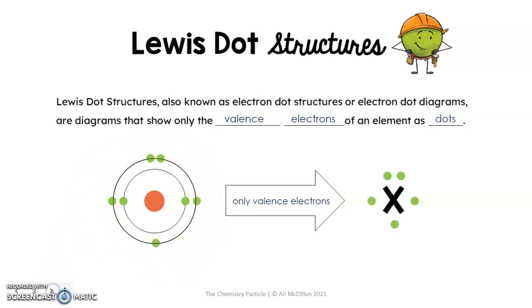When we draw our electron dot diagram, we're going to put the symbol of the element in the middle, and then we're going to essentially draw the same thing that's in our outer ring of our Bohr model just around the elemental symbol. So this one has 5 valence electrons, 5 dots to represent those valence electrons in the electron dot diagram. And it's as simple as that.